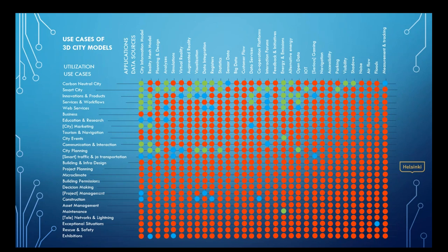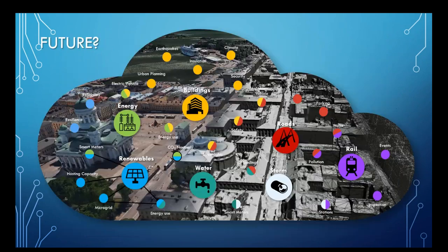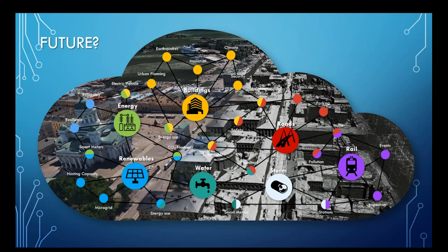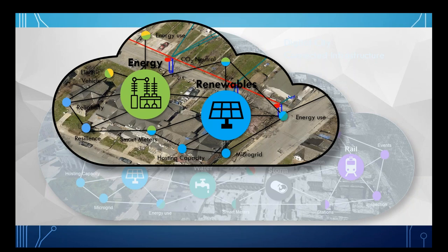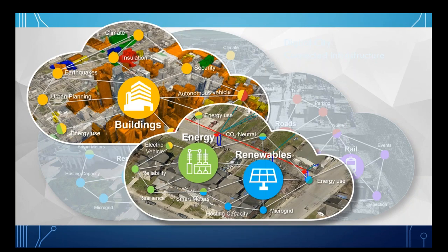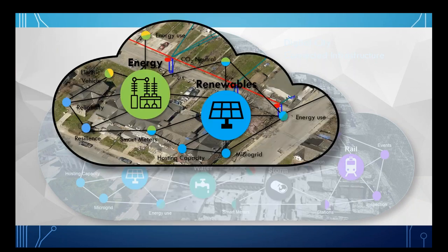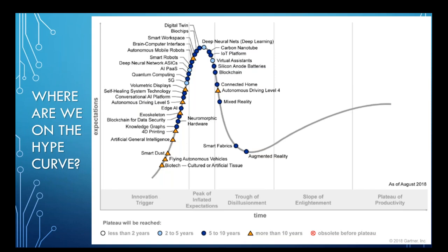Helsinki has been working on the digital twin idea for a while. Their website shows a range of use cases: smart carbon, smart city services, city marketing, tourism, city planning, traffic and transportation, microclimate, and rescue and safety. They know there are many things they could do with full digital implementation and they're moving forward with it. Could the future be this interconnected system where we use artificial intelligence to improve systems? I think we can — we're going to get that connected infrastructure at the buildings level and the renewables and infrastructure level, able to talk and interact with each other.